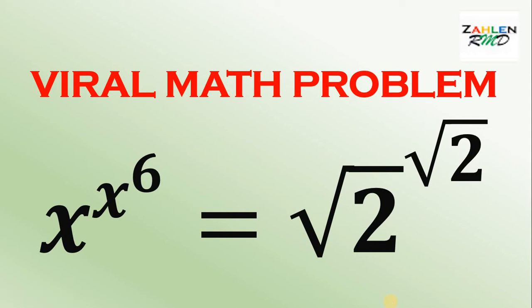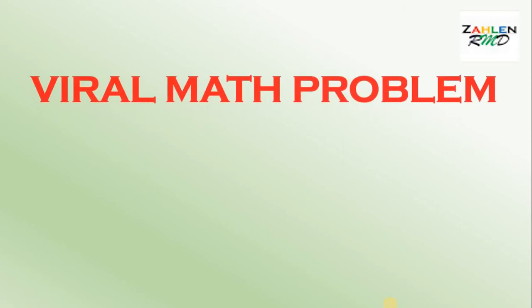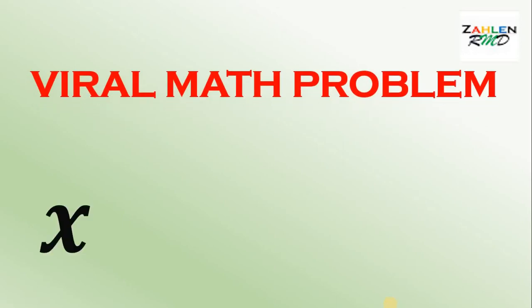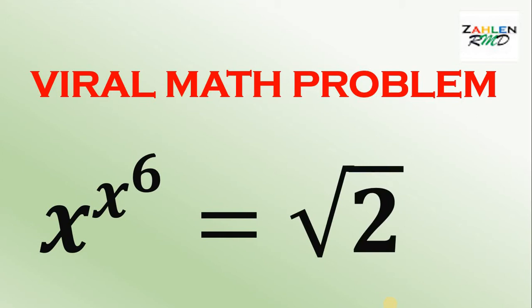Good day everyone! Let's try to answer a viral math problem posted on Facebook. Here's the question: we have x raised to x raised to 6, is equal to square root of 2 raised to square root of 2.